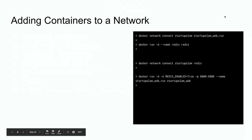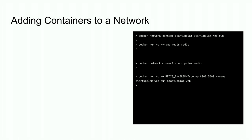Ideally what's supposed to happen here is: first line, connect our running Startup Slam application container to the network; second line, boot Redis back up; third line, connect Redis to the network; and the last command boots the Startup Slam web container with the `REDIS_ENABLED=true` flag set. You should then be able to curl against localhost and get back a Fibonacci number.